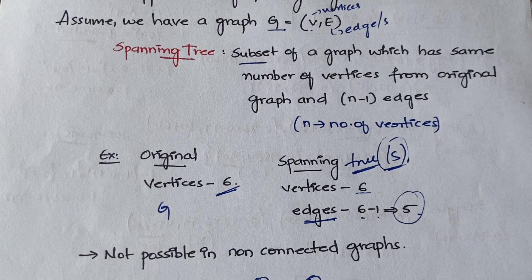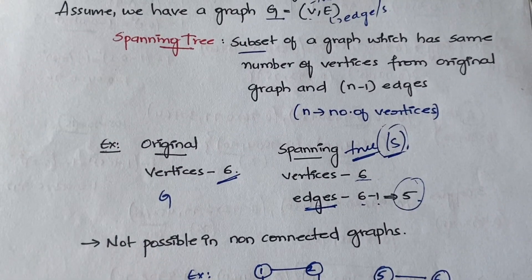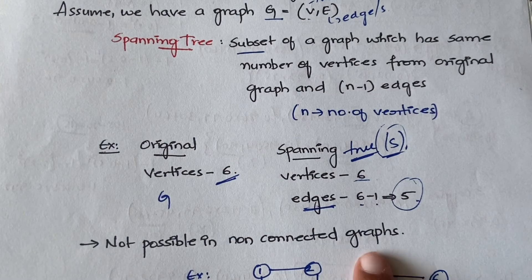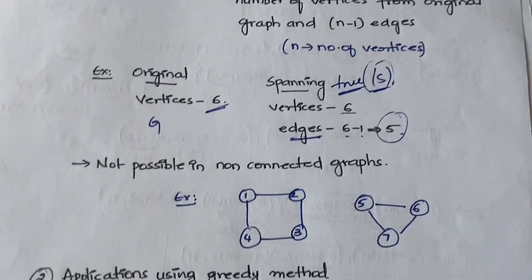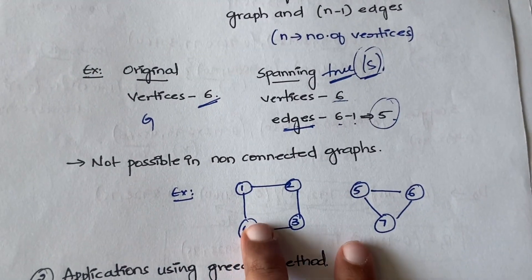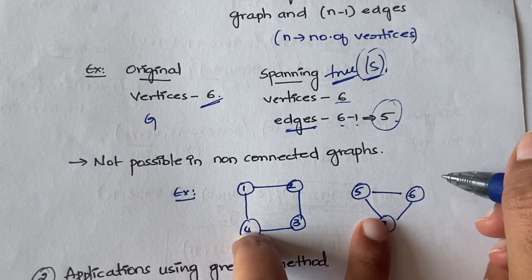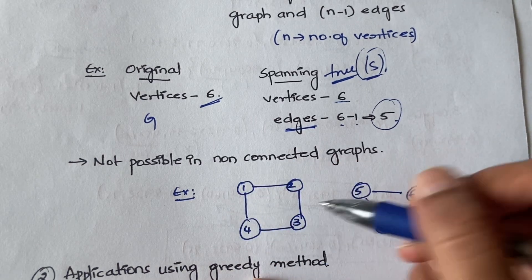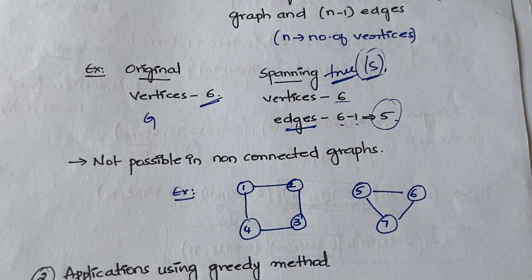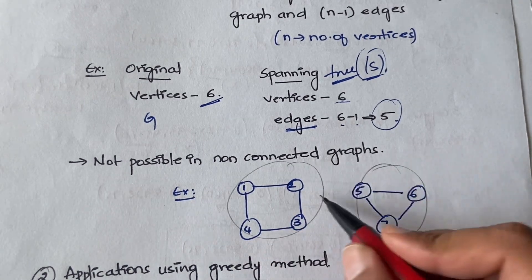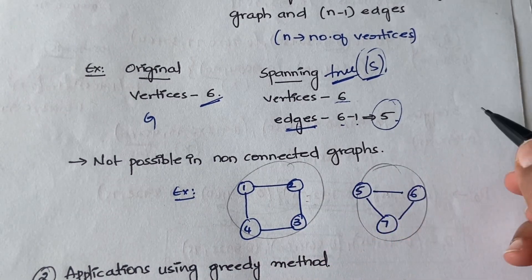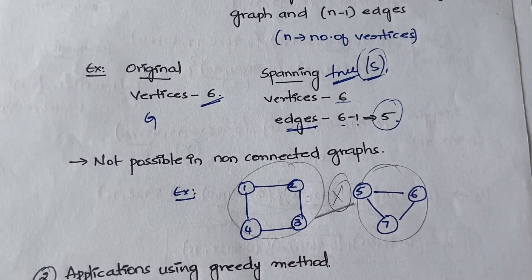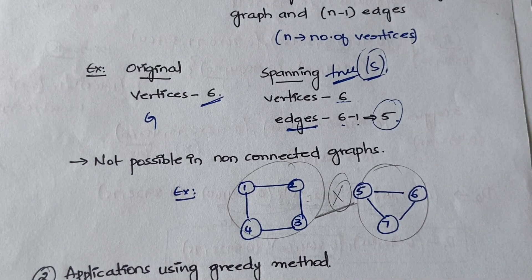One more thing to remember: you cannot get a spanning tree for non-connected graphs. A non-connected graph has two separate graphs with no connection between them. You can get spanning trees for each individual unit separately, but not for both together, because there is no connection between the two graphs.